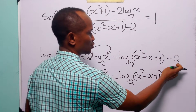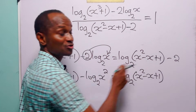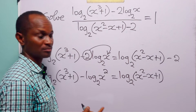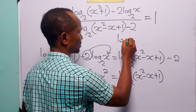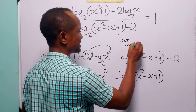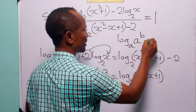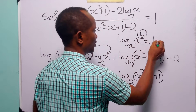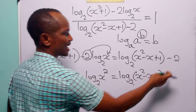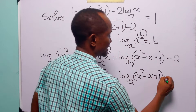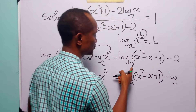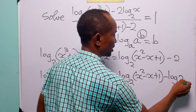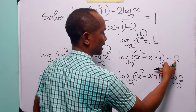Now instead of 2, we are going to write this 2 in terms of log to base 2. Remember that 2 equals log to base 2 of 2 to the power 2.